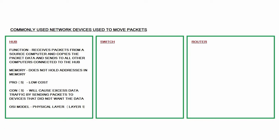What does a network hub do? Basically what it does is it receives packets from a source computer and copies all of that packet data and sends it to all the other computers connected to the hub. It's a device used in a local area network for computers that are connected together. One thing to note — it does not hold addresses in memory like other devices do. It's a very simple, low-cost device, and if your LAN is small and doesn't have many computers, it functions sufficiently.